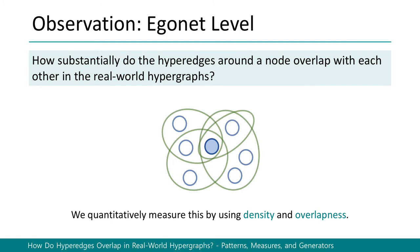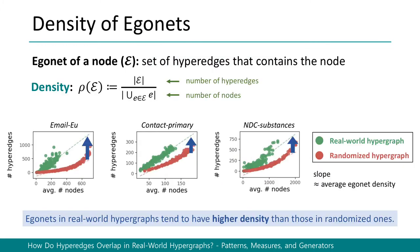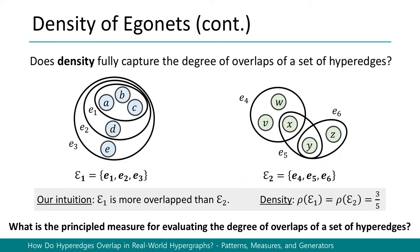Our question is: how substantially do the hyper-edges around a node overlap with each other in real-world hypergraphs? To answer this question, we measure the density and overlapness of the egonets in the hypergraphs. An egonet of a node in the hypergraph is defined as the set of hyper-edges that contains the node. The density of a set of hyper-edges is defined as the number of hyper-edges divided by the number of nodes. We observe that egonets in real-world hypergraphs tend to have higher density than those in random ones. However, does density fully capture the degree of overlaps of a set of hyper-edges?